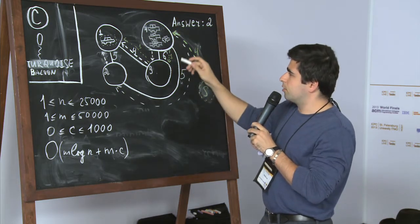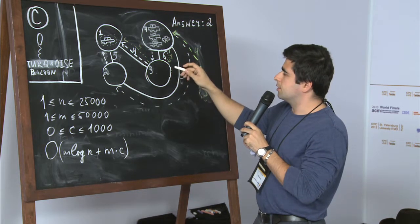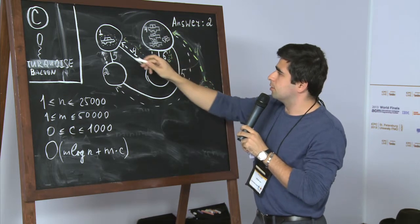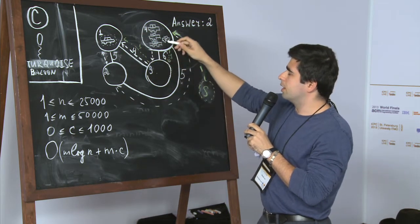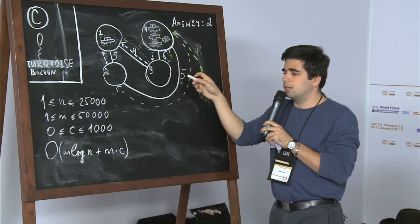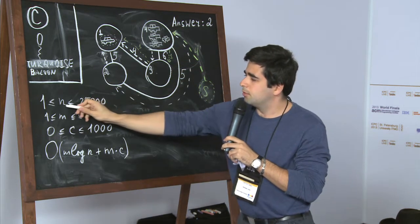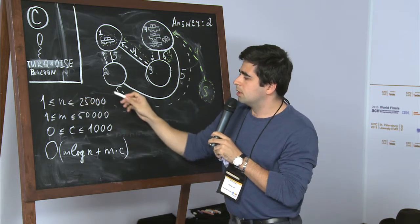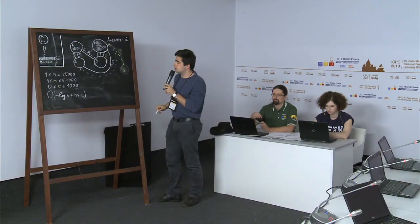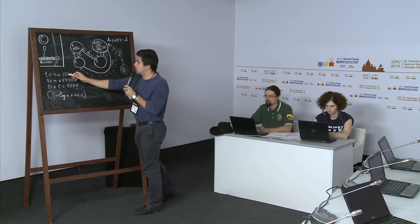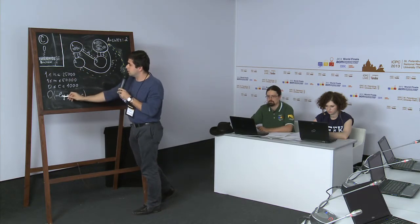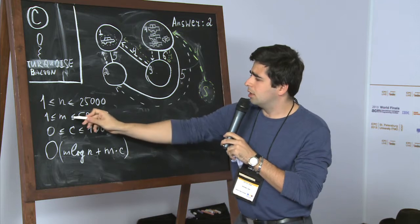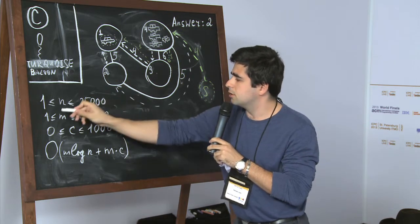So basically the solution for this problem goes like this. First we find the distances from destination to all other vertices in the graph using Dijkstra algorithm with a priority Q. We have to use this improved version of Dijkstra algorithm because the number of vertices in this problem is up to 25,000 and it would be too long to do it in n squared. So we do it in m log n where m is number of roads that is allowed.